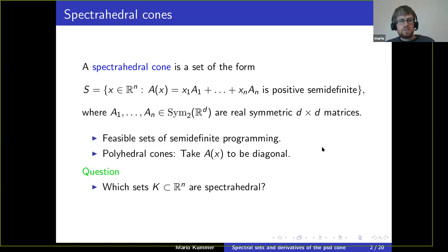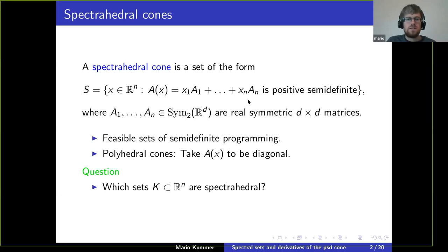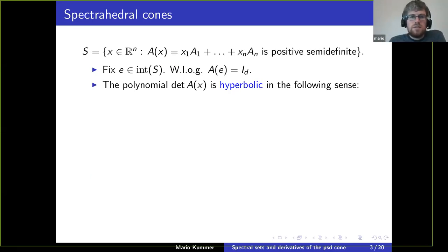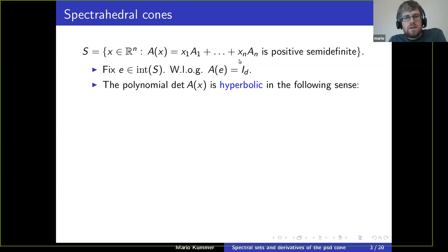The question I'm interested in is: which convex sets in R^n are spectrahedral? Which can be described with a linear matrix inequality? There's one rather restrictive necessary criterion that I want to explain. Let's look at our spectrahedral cone — since it's convex, we can assume it has non-empty interior.